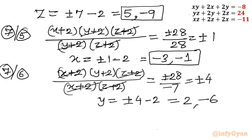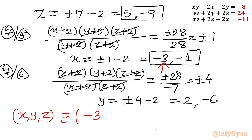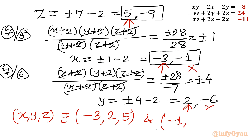Now let us frame our solution. There are two solution sets for (x, y, z). The first set is (negative 3, 2, 5) and the second set is (negative 1, negative 6, negative 9). The sign choices were made because the other combinations would not satisfy the original equations.